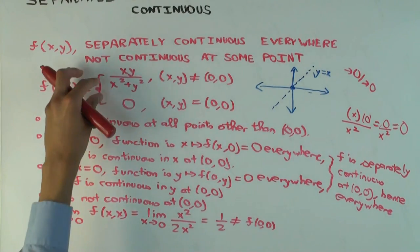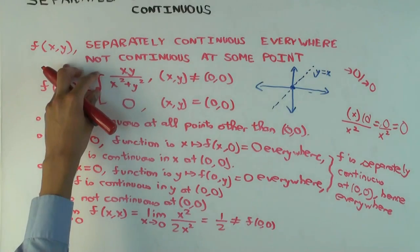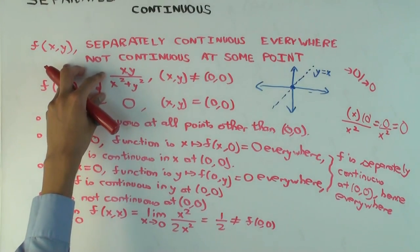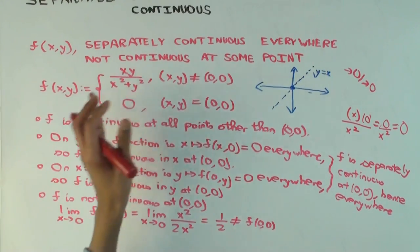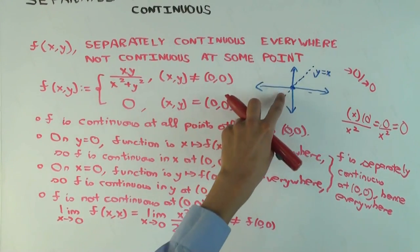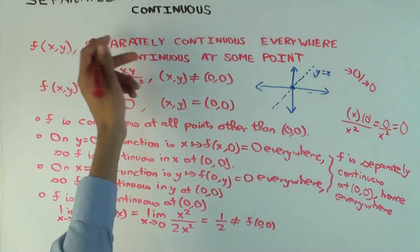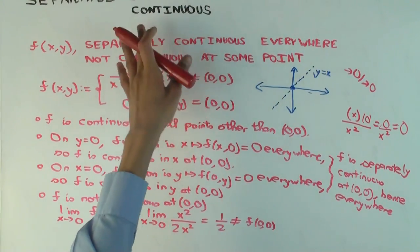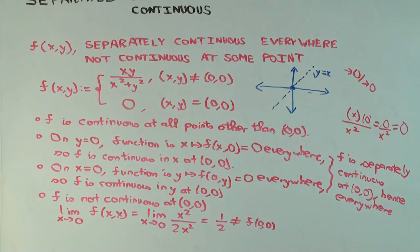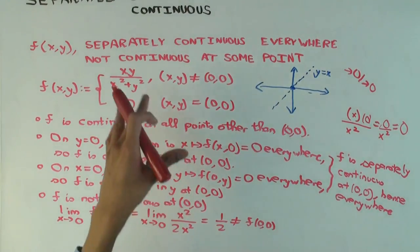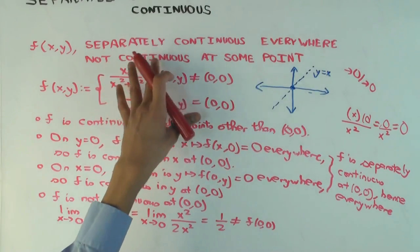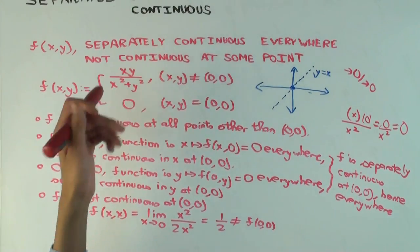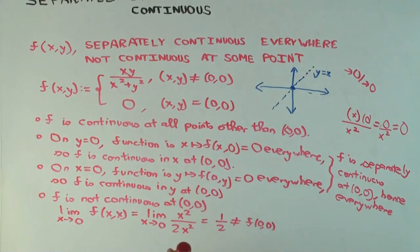So here's an example of a function that's separately continuous everywhere — continuous in each variable everywhere — but there is a point where it's not jointly continuous. Jointly continuous is just saying continuous.